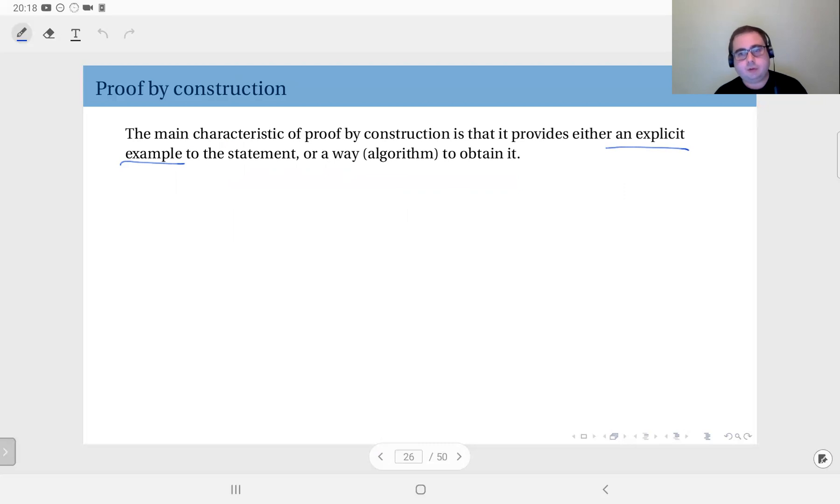Alternatively, sometimes proof by construction doesn't give you an explicit example but gives you a way, a method, or an algorithm to obtain an explicit example. Here's an example: for every positive definite matrix A, there exists a lower triangular matrix L such that A equals L times L transpose.